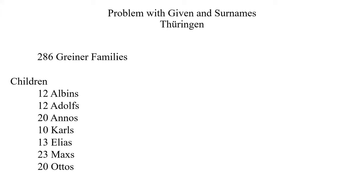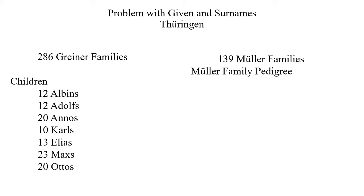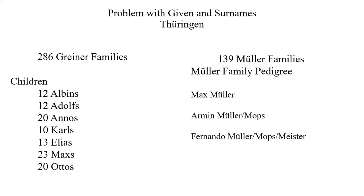Think of the difficulty the ministers must have had keeping christening, confirmation, marriage, and death records straight as to who belonged or was related to whom. In the case where two fathers had the same given name and surname, the minister would also identify them by their occupation. To make it easier to identify their children, they began giving their children additional middle names. There were also 139 Mueller families. On one Mueller family pedigree chart, the following generations were listed beginning with Max Mueller. His son Armin added the nickname Mueller Mops. Armin's son became Fernando Mueller Mopsmeister, and his son added the nickname Elias Mueller Mopsmeister Fernando Ballard.